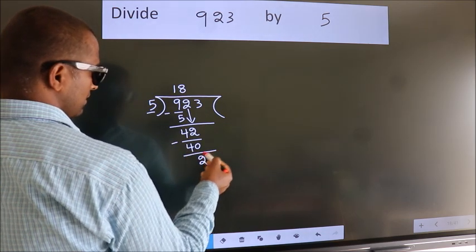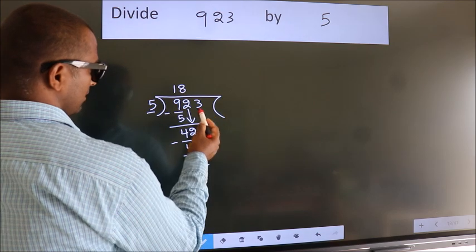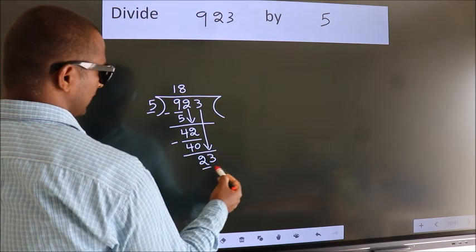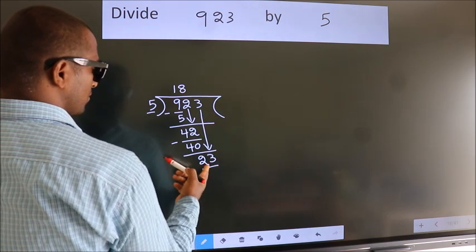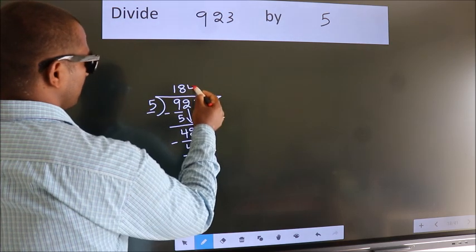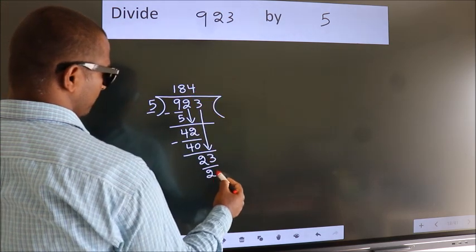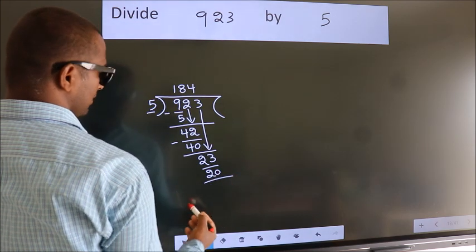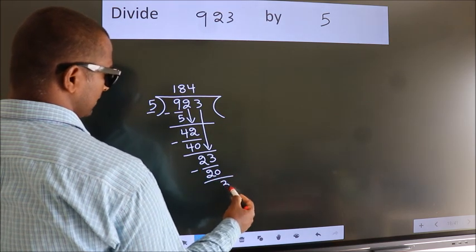After this, bring down the next number. So, 3 down. 23. A number close to 23 in the 5 times table is 4 times 5 is 20. Now, we subtract. We get 3.